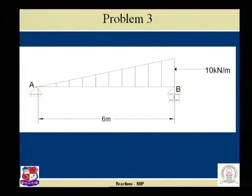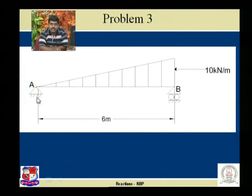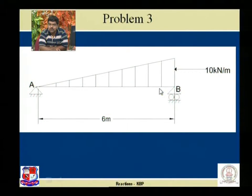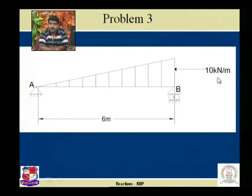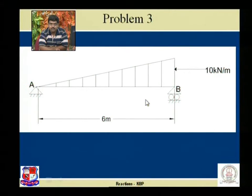Which kind of beam is given for problem three? It is definitely a simply supported beam — at joint A there is a hinge, at joint B there is a roller support. The length is six meters. The important thing is the type of loading: it is a UVL, uniformly varying load, because the load has a zero value at one end and a maximum value of 10 kilo newton per meter at the other end, varying uniformly along the length. Our intention is to find the support reactions using equilibrium conditions.